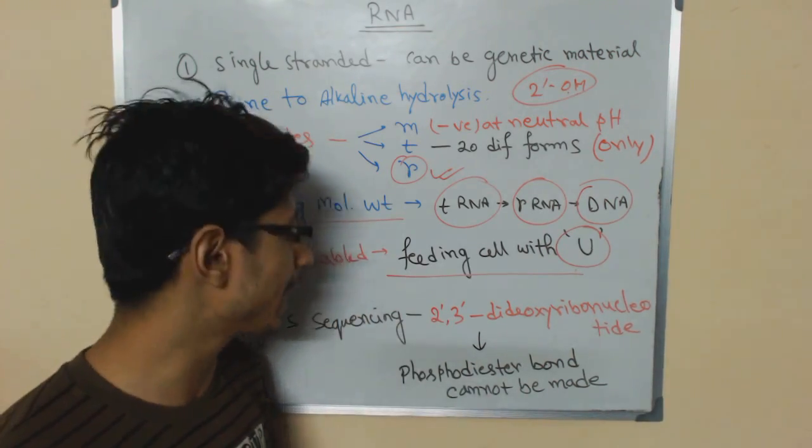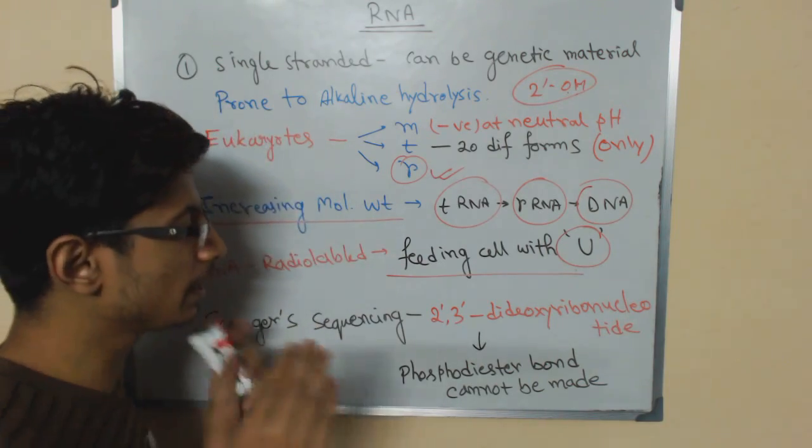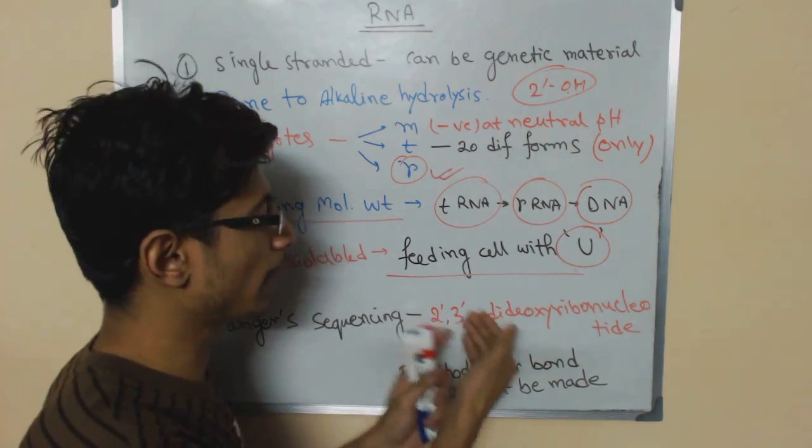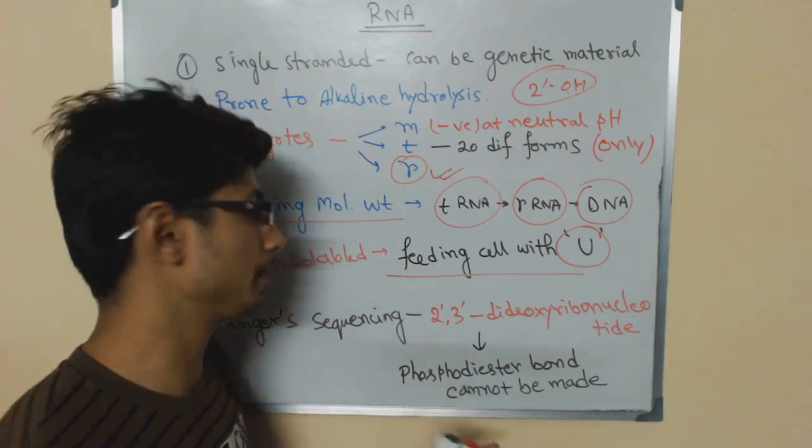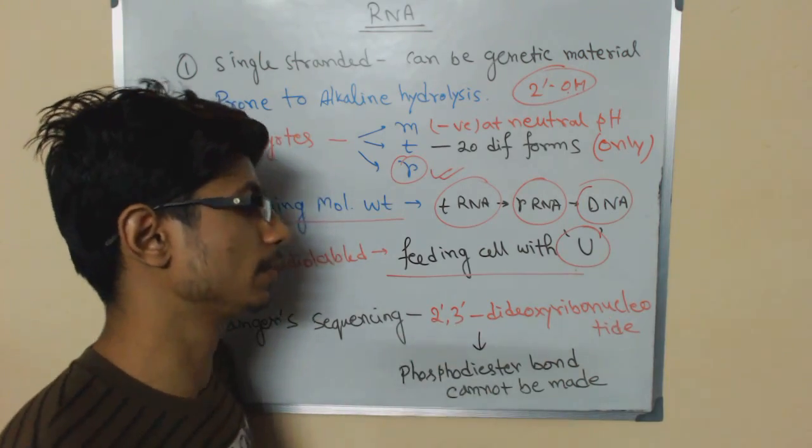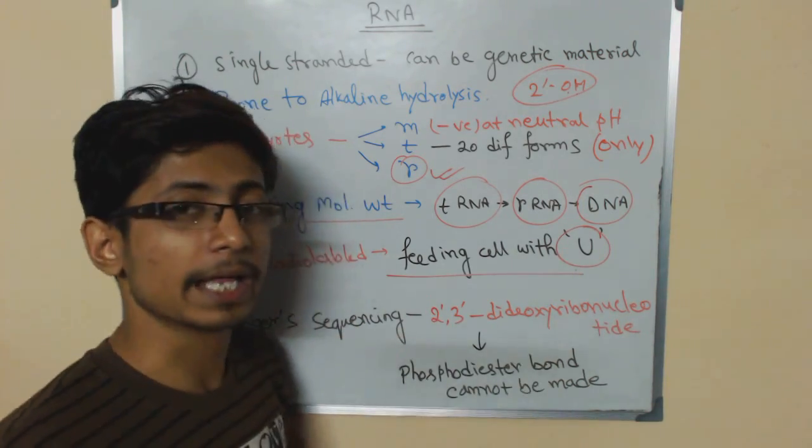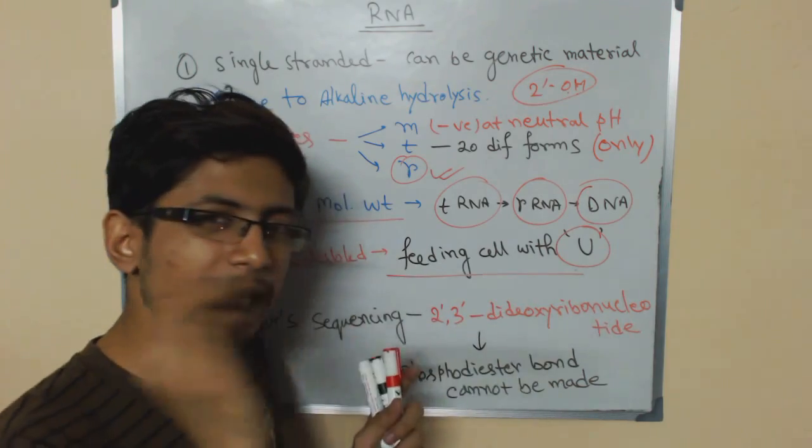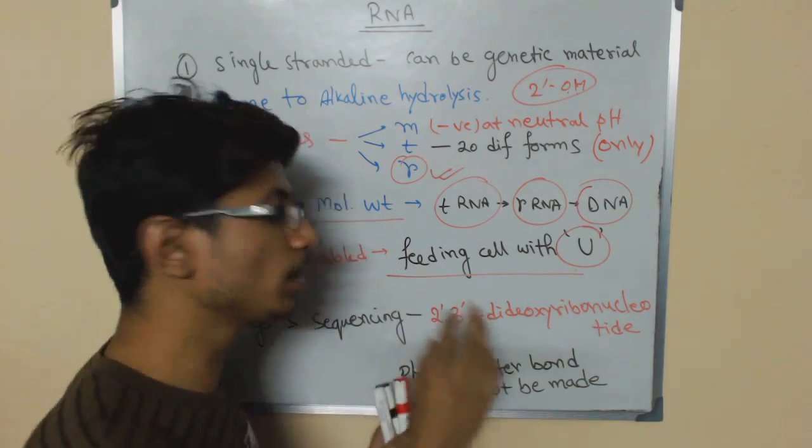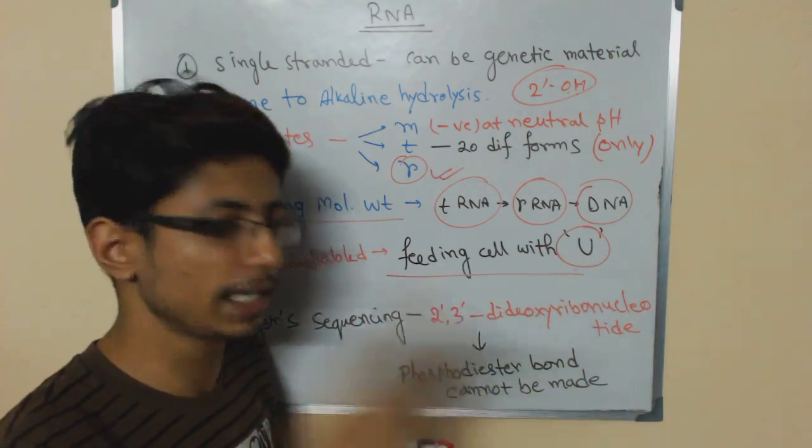Now the Sanger sequencing, we use 2'3' dideoxy ribonucleotide. Dideoxy ribonucleotide, actually we put nucleotide—it's modified nucleotide.